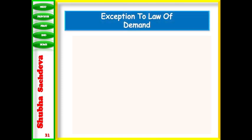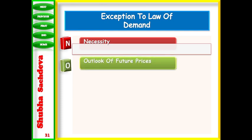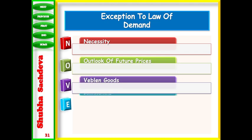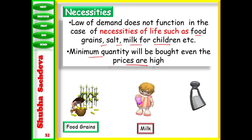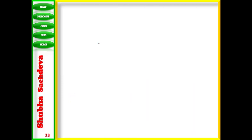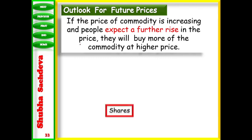Now here are some exceptions to the law of demand where this law does not follow. We made the law that when prices increase, demand decreases. But there are some things where this does not follow. First is necessity - some things are very important for us. Even if prices increase, we cannot reduce demand for them. Second is outlook of future prices - if people think prices will rise in future, they will buy more now. If they think prices will fall, they buy less now. Demand is increasing or decreasing but there is no effect of current prices, only expectations.